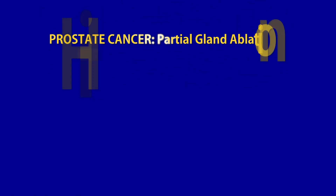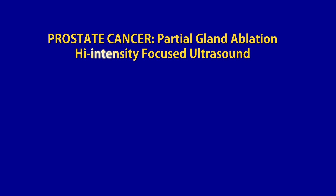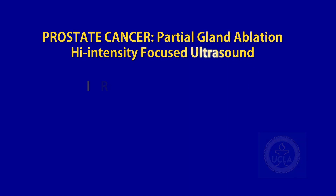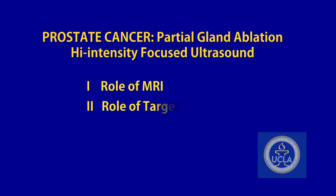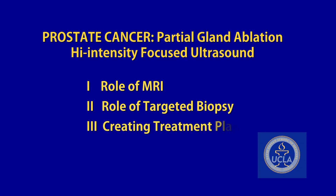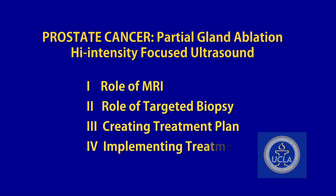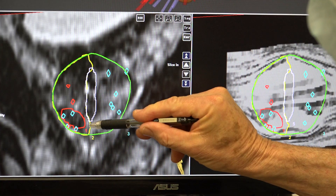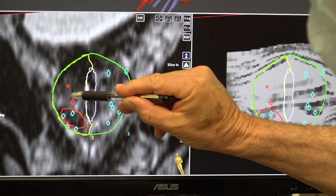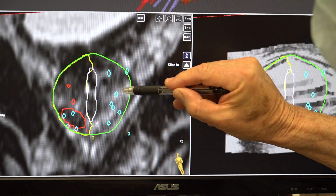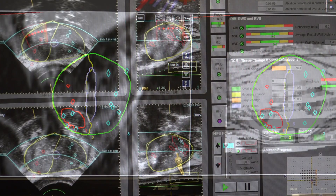In this video we show a method based on this research for planning focal therapy of prostate cancer. Here we show in four parts how partial gland ablation with high intensity focused ultrasound starts with MRI, continues through targeted biopsy, becomes refined through use of planning software, and is then implemented. The aim is to provide adequate treatment margins for complete ablation of the tumor while at the same time sparing as much normal prostate tissue as possible.